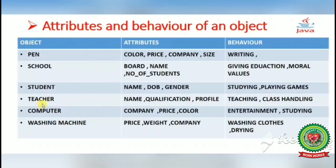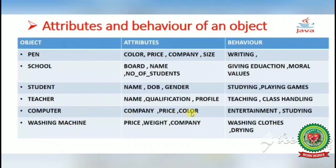The next object is a teacher. Attributes of a teacher are: name, qualification, profile, date of birth, and the institution where she is teaching. Behavior is teaching and class handling. Next, a computer has attributes: company, price, color, configuration, camera pixels, and resolution. The behavior of a computer is entertainment and study.